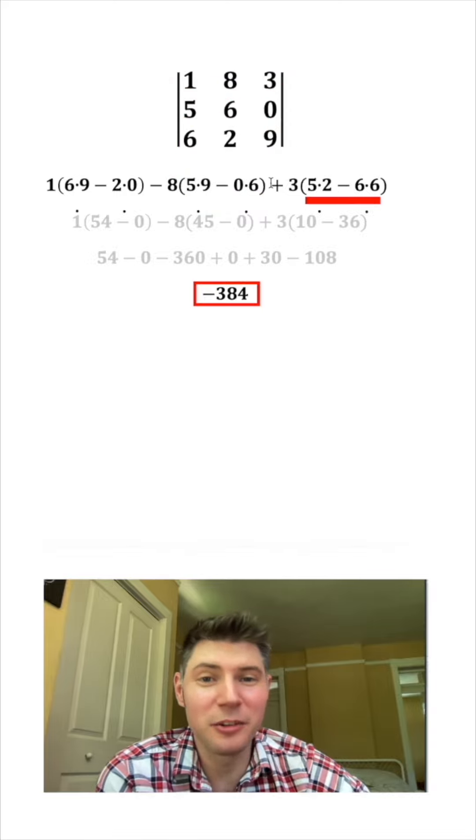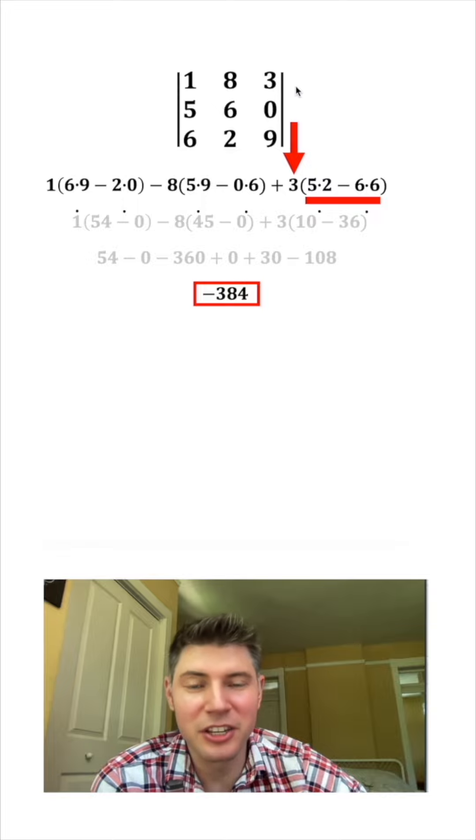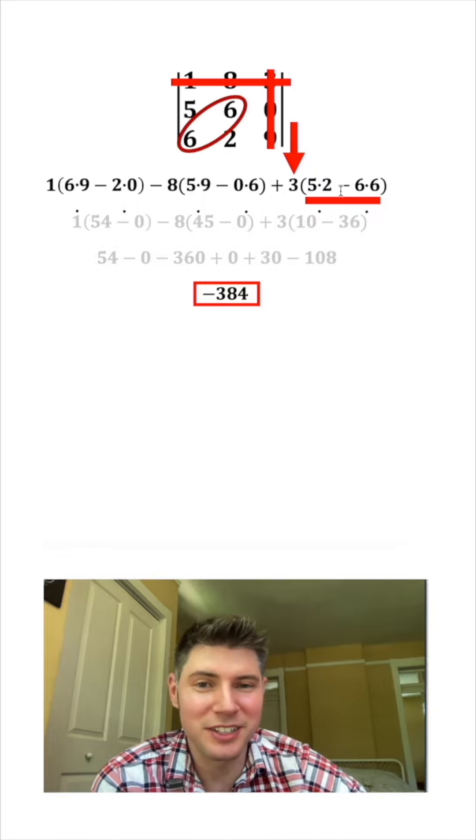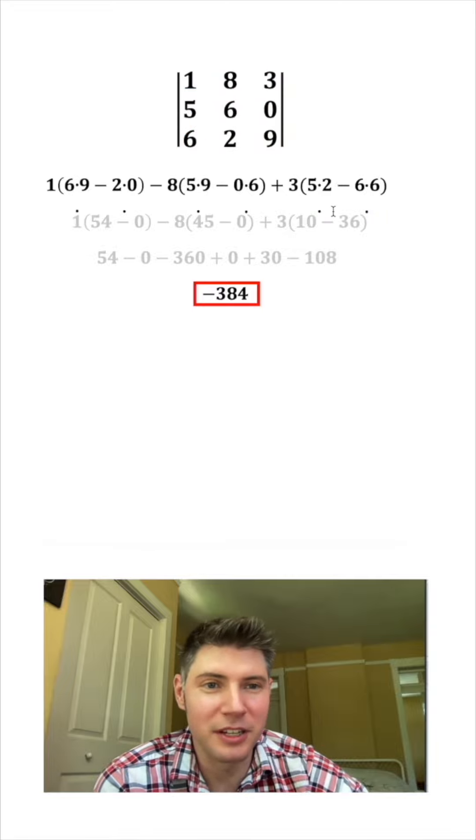Then you start over again. The way you find this here, you take the three, you find it up here, you get rid of that column and that row, and then you do five times two minus six times six. And then from here, it's just arithmetic and order of operations.